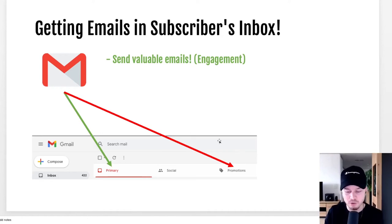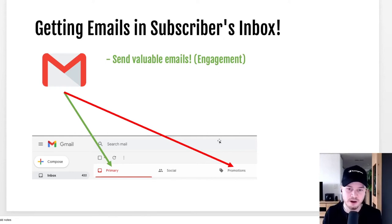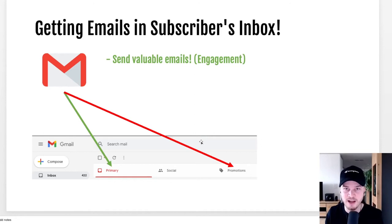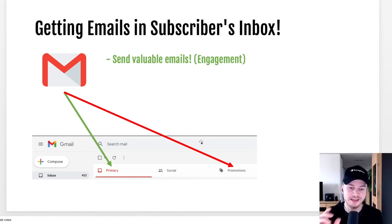One thing you have to make sure you do is to actually send valuable emails. Don't spam your audience and don't send emails that are not important to them. Email service providers like Gmail track how many of your subscribers actually open your email, how many people read it, how many click on links, and how many people reply. They want to know if people are engaging with your emails, and that shows Gmail that your emails are valuable — they will build trust with your email domain and continue to put your emails in the primary inbox.